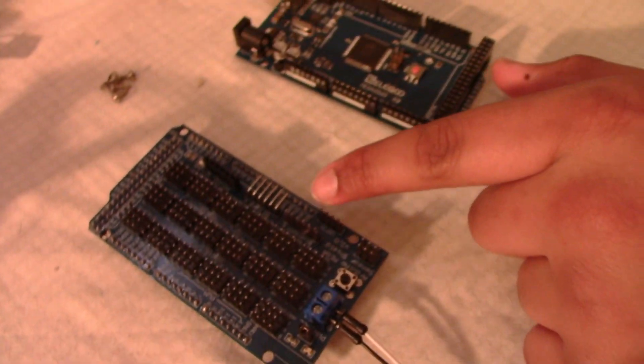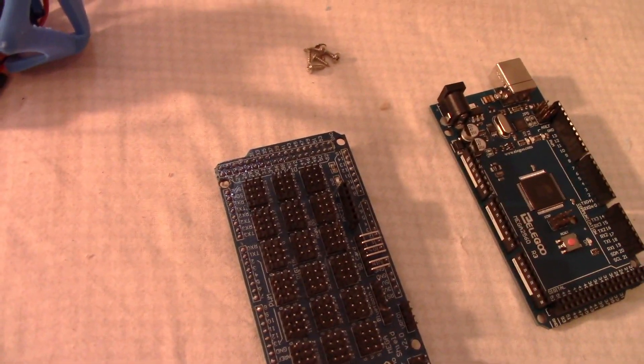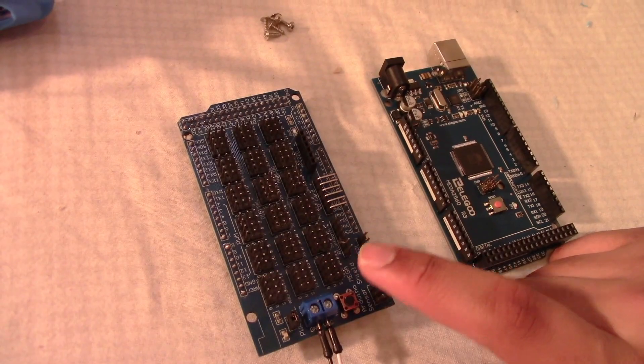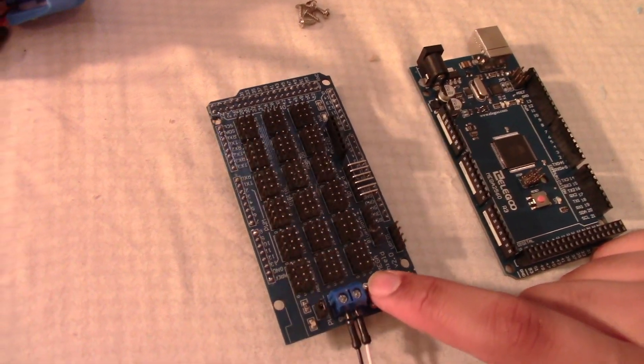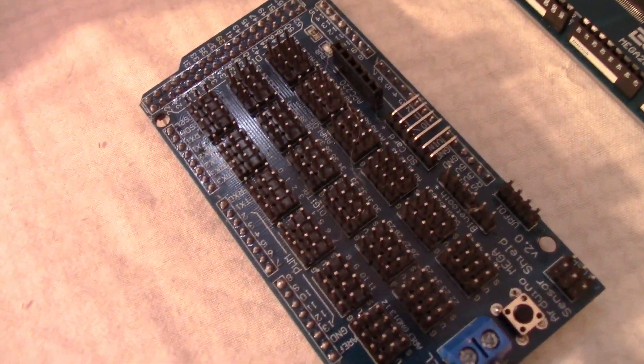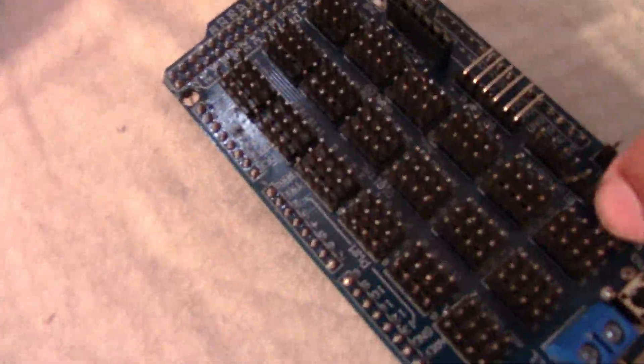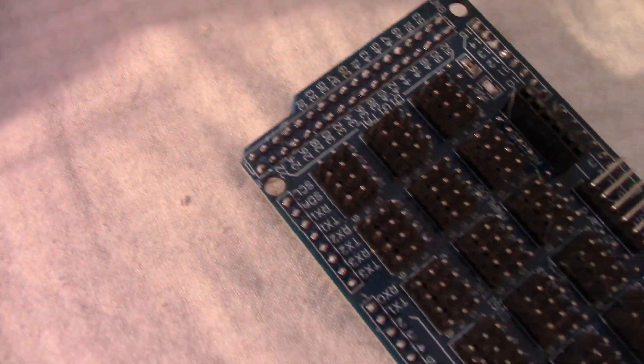Right there, those are six screws. This is the Arduino and the electronics, the brains of the whole robot. Here's the Arduino Mega and here is our motor driver shield. It has I think around like over 70 pins. You can see them over here.